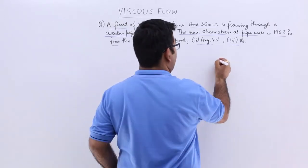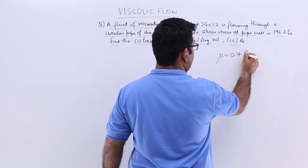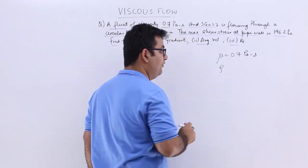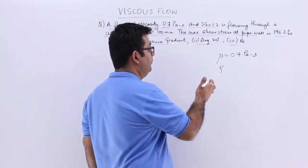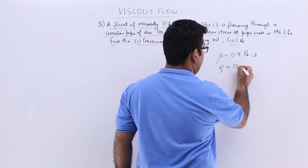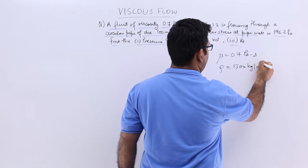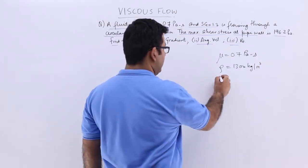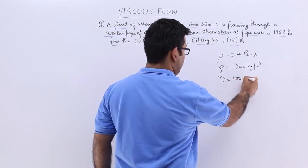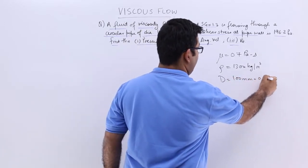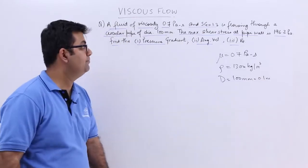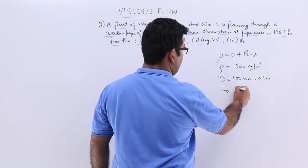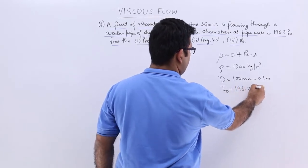So given data is viscosity is 0.7 pascal second. Then you have the specific gravity, which will give you the density. So 1.3 into 1000 gives you 1300 kilograms per meter cube. The diameter of the pipe is 100 mm, which is nothing but 0.1 meters. The maximum shear stress, let us say tau 0 is 196.2 pascals.